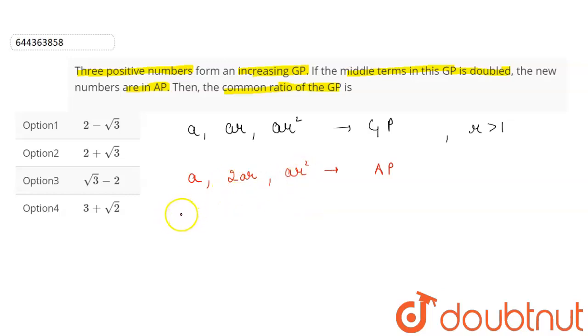in AP, so their common difference will be equal to 2ar minus a. Also, the common difference will be equal to ar square minus 2ar.